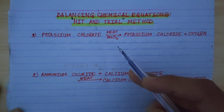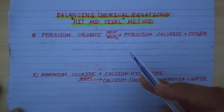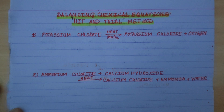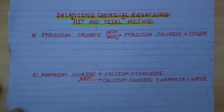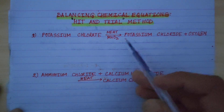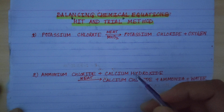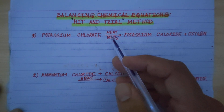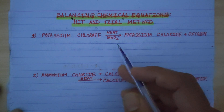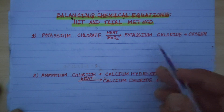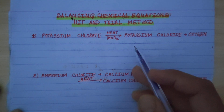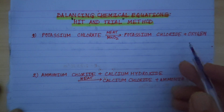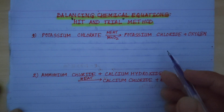This is about the trial method. Let's write the chemical equation. First we write the word equation, then we convert it to a formula equation. Potassium chlorate with application of heat in presence of manganese dioxide as catalyst gives potassium chloride and oxygen. We write the word equation first, then the formula equation.